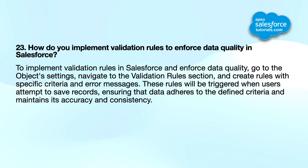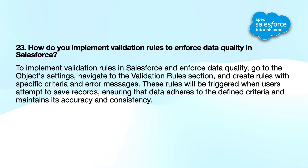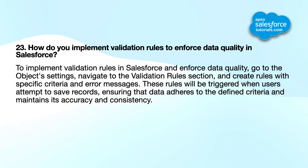Twenty-third question: how do you implement validation rules to enforce data quality in Salesforce? To implement validation rules, go to the object settings, navigate to the validation rules section, and create rules with specific criteria and error messages. These rules will be triggered when users attempt to save records, ensuring that data adheres to the defined criteria and maintains consistency.